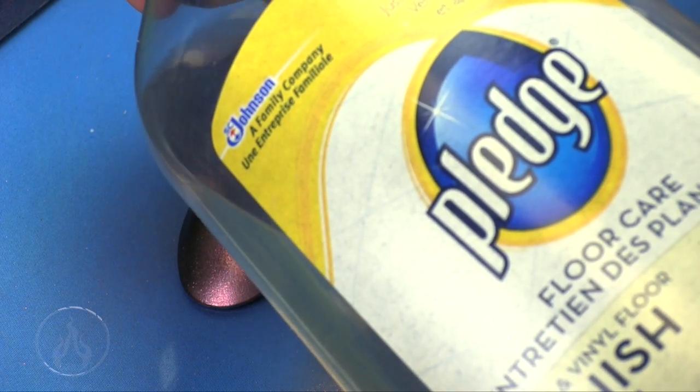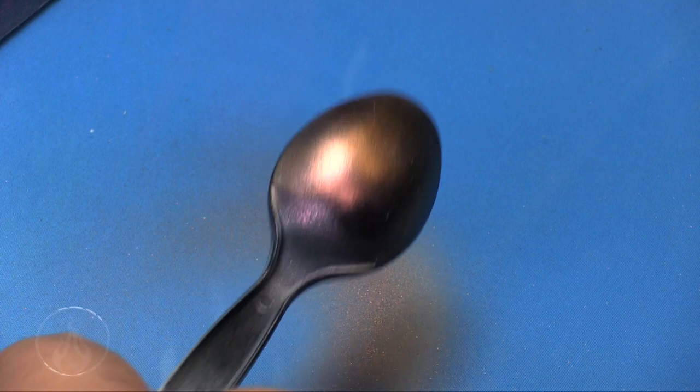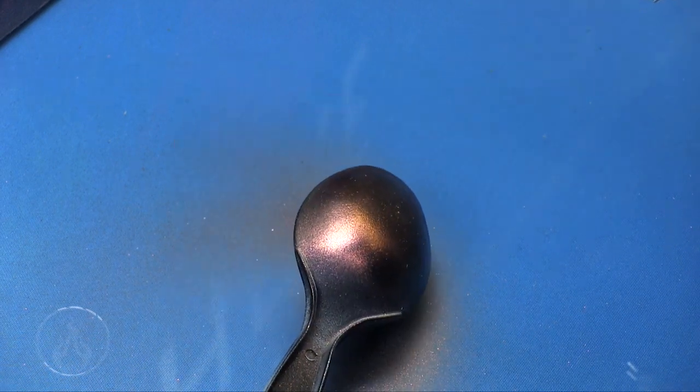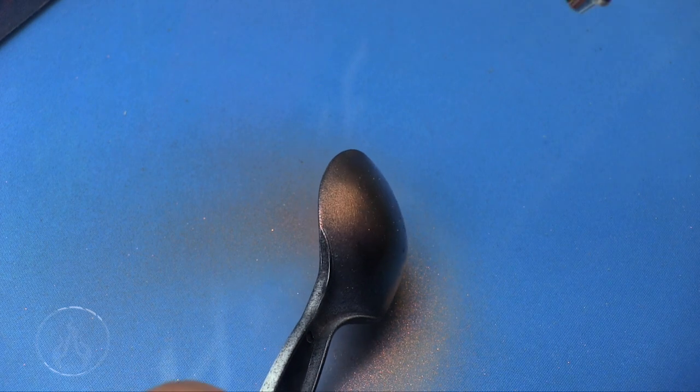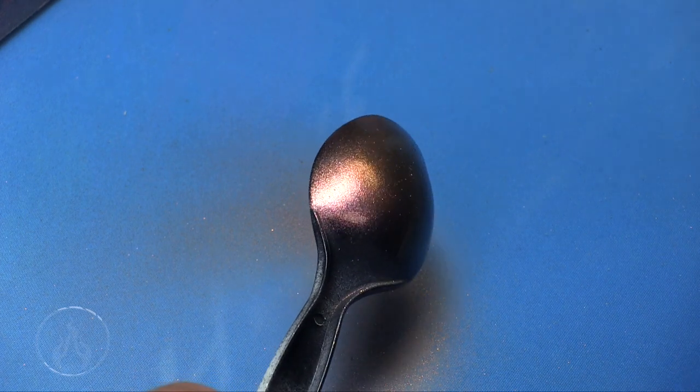Here I'm going to take some Pledge Future Floor Shine and we're going to seal these things. What's not going to be showing here is how many layers I do, and I approximately do about six or seven layers on these surfaces.